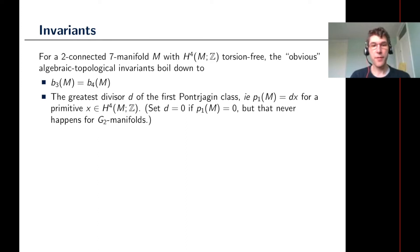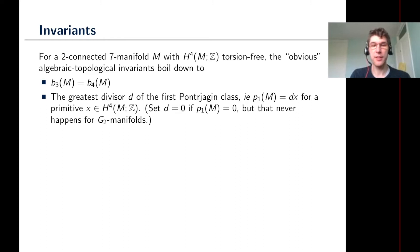A quick survey of the invariants. If we restrict attention to two-connected seven-manifolds where the fourth cohomology is torsion-free, then there are basically just two obvious topological invariants: the third Betti number — which equals the fourth Betti number by Poincaré duality — and the Pontryagin class. If the fourth cohomology is torsion-free, the only remaining information from the Pontryagin class is how divisible it is: you write the Pontryagin class as D times some primitive element of the cohomology group, and what is that D?